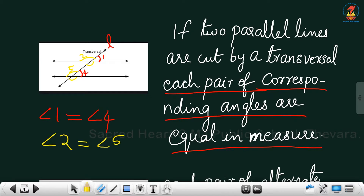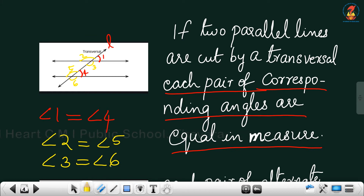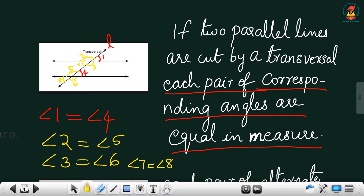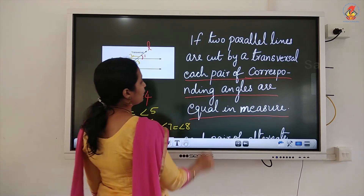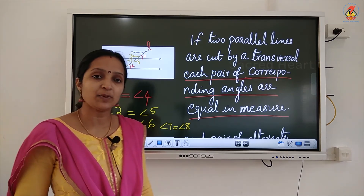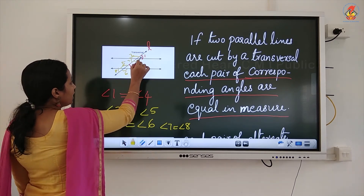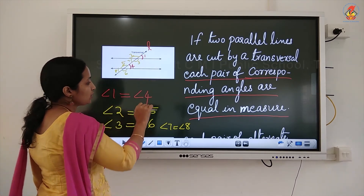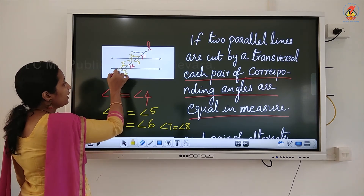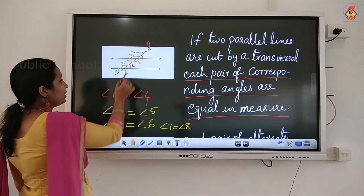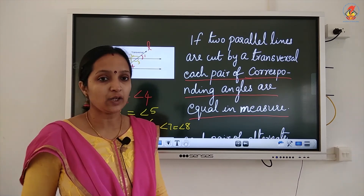This angle and this angle are also equal — name them angle 3 and angle 6, so angle 3 is equal to angle 6. Similarly, the next pair: angle 7 and angle 8, so angle 7 is equal to angle 8. So if two parallel lines are cut by a transversal, all pairs of corresponding angles are equal. Angles 1 and 4, angles 2 and 5, angles 3 and 6, and angles 7 and 8 are all corresponding angle pairs and they are equal.